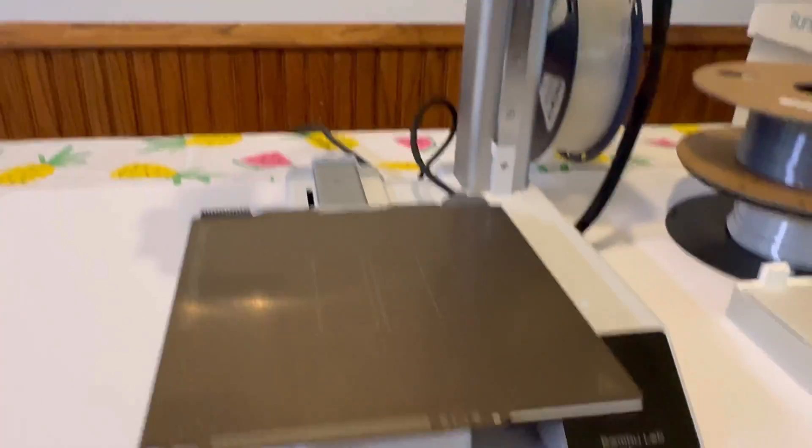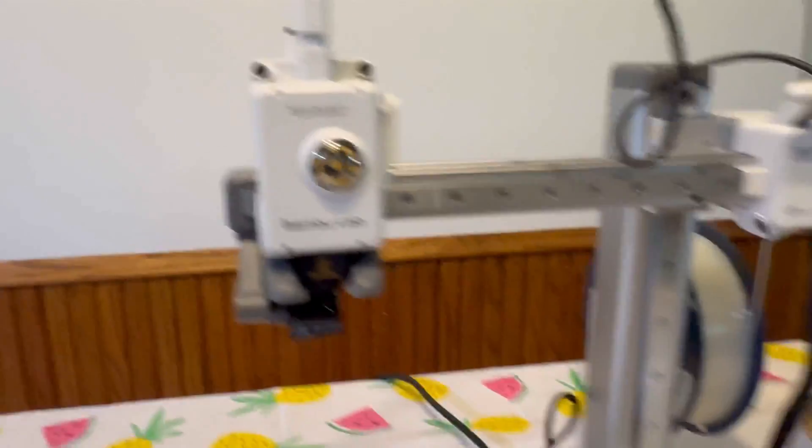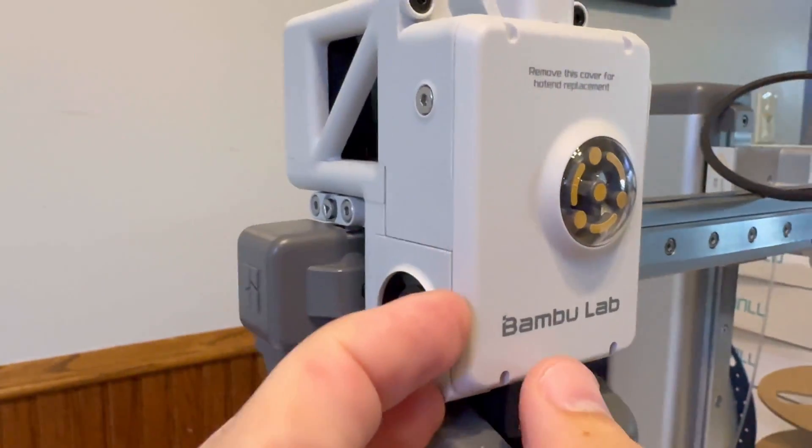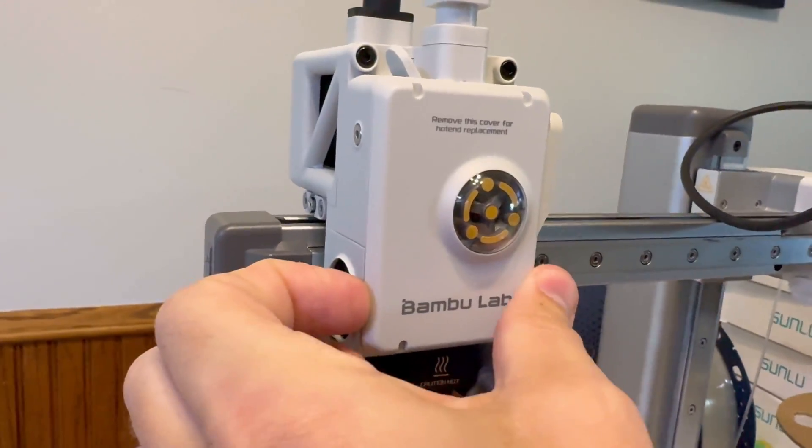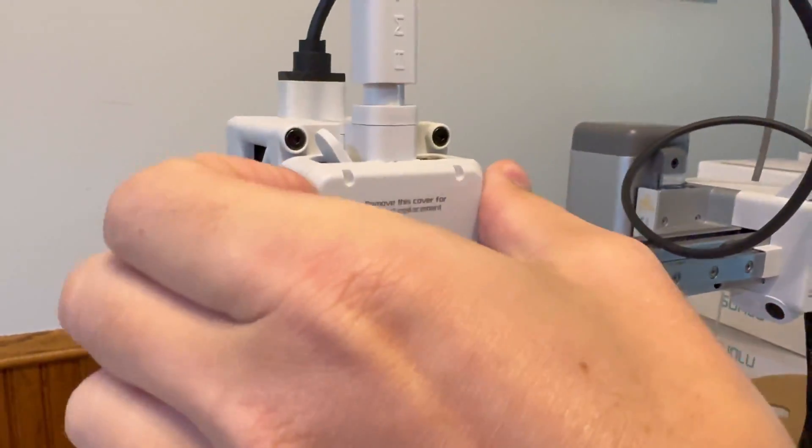Step number one is to make sure your machine is shut off. Step number two is to take this face off. What I usually do is put my fingernail in this little section right here, move the head unit over a little bit, just kind of get your nail in there and peel it off here. Give that a little pull.